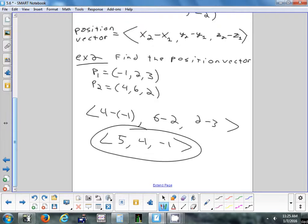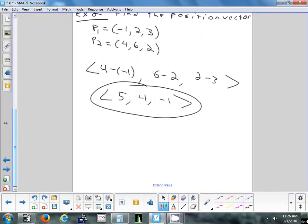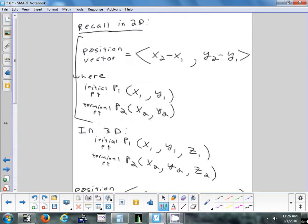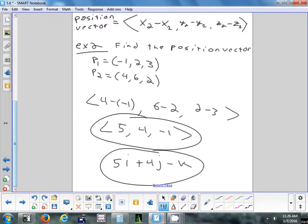Okay, so there is a position vector for those two points. Now if they wanted it with i, j, and k, John, can you just write it that way for me? Five i plus four j minus k. Yep. Good. So any question on finding a position vector in 3D? On the test, they could ask for it either way. Some of the questions will be multiple choice, so if you get this answer with the angle brackets, just know that it's the same as this.